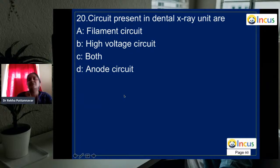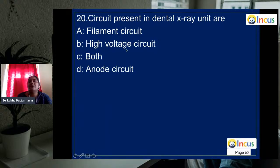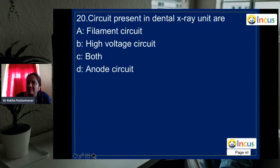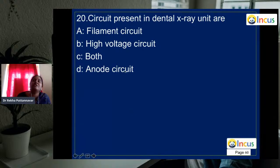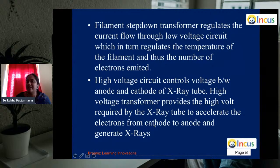Question 20: the circuits present in the dental X-ray unit are both the filament circuit and the high voltage circuit. The filament circuit uses a step-down transformer — current is passed through the tungsten filament, heating it and releasing the maximum number of electrons. The high voltage circuit provides the potential difference between cathode and anode to accelerate these electrons, generating X-rays. The answer is C — both circuits.